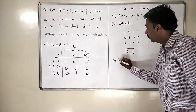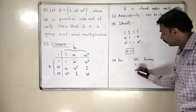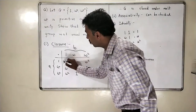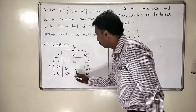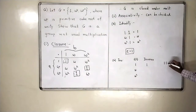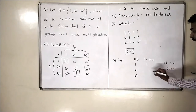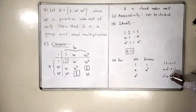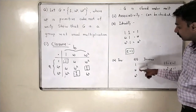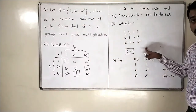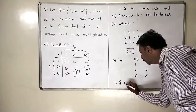The fourth property is inverse. From the table: 1 times 1 is 1, so 1 is its own inverse. Omega times omega square equals 1, so the inverse of omega is omega square. And omega square times omega also equals 1, so the inverse of omega square is omega. All elements in G — 1, omega, omega square — have inverses. We have identity, associativity, closure, and inverses, so G is a group.